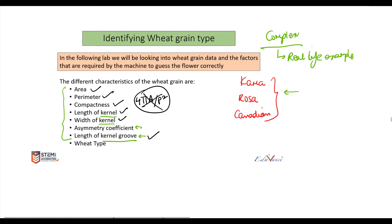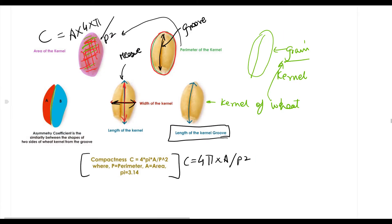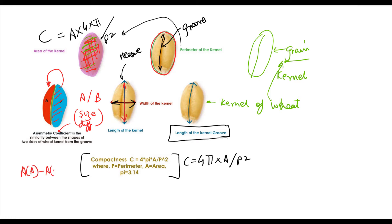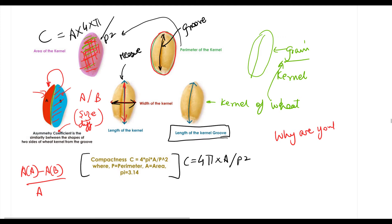Last but not least, we have something called the asymmetry coefficient, which means how much one side is bigger than the other. If we have two sides B and A, the asymmetry coefficient formula is: area of A minus area of B, divided by the total area of the kernel. So it is the left area minus the right area upon the total area.